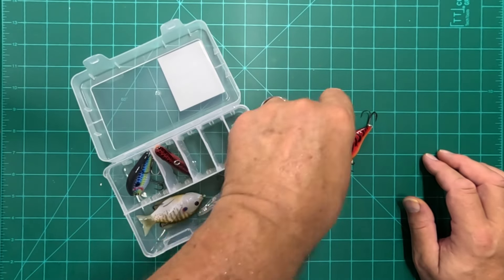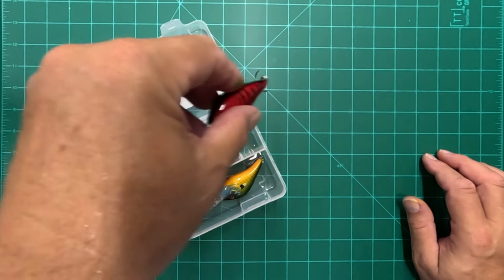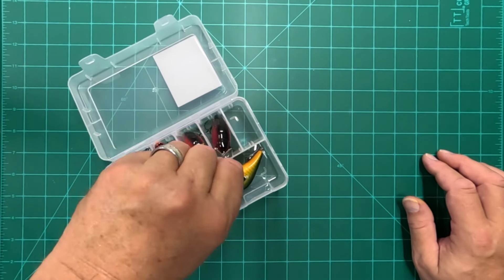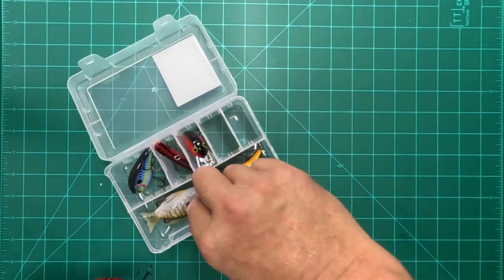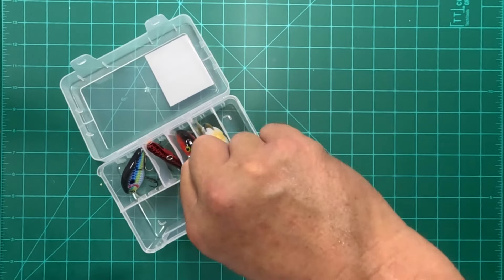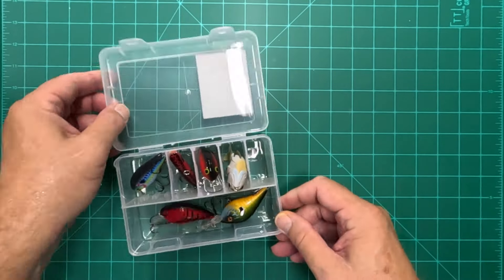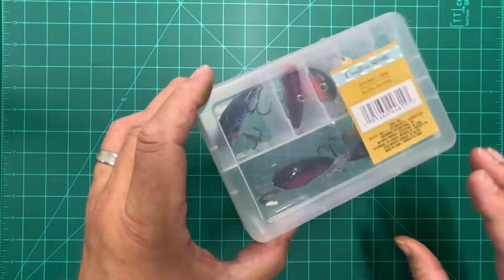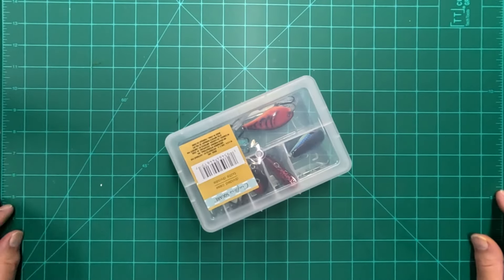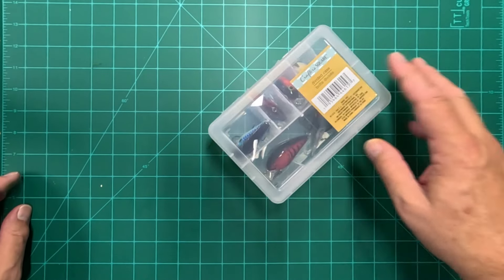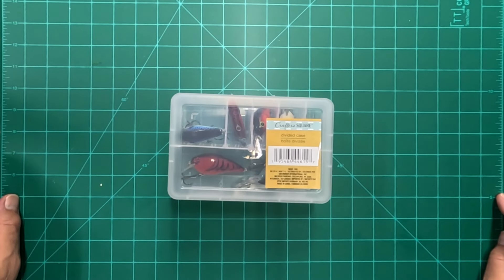And they're not going to get mixed up, and there's room for them. A lot of these storage cases you pick up at the Dollar Tree just aren't quite big enough for the lures we want to put in. So there you go. Crankbaits stored nicely in this divided storage case. We're going to stick that in our backpack.